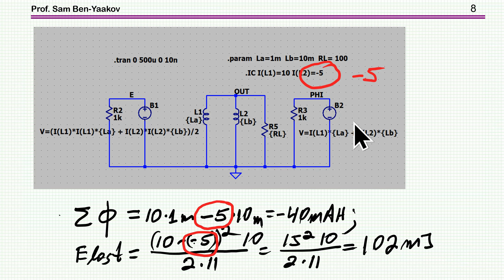Now what about the case that the current will be in opposite direction? Everything is the same, but you have to be careful to keep the sign, both for the total flux and also for the energy loss. So in this case, it will be 10 plus 5, and in this case, it will be here minus. So once you do that, we get 40 milliamp Henry for the total flux, and we get 102 millijoules for the energy loss. It's larger because the current now in the same direction.